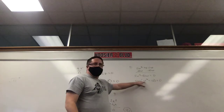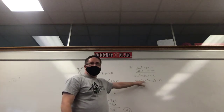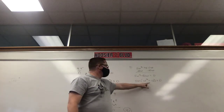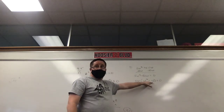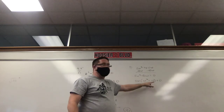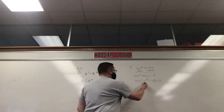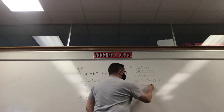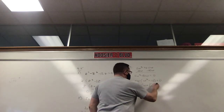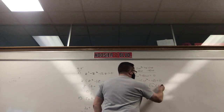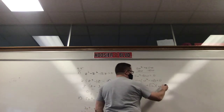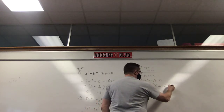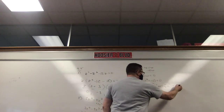So w² is w squared, and 10 is the square root of 10 squared. So w² − 10 factors to (w + √10)(w − √10).